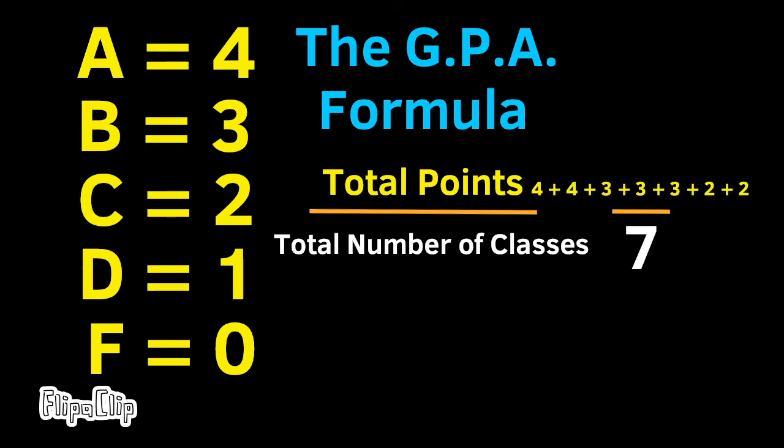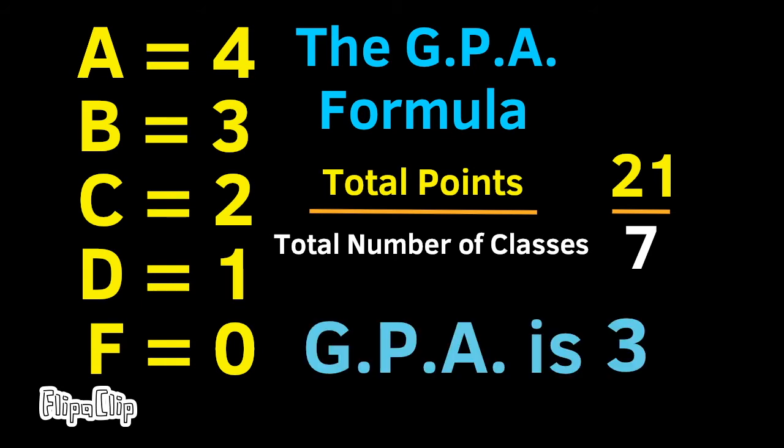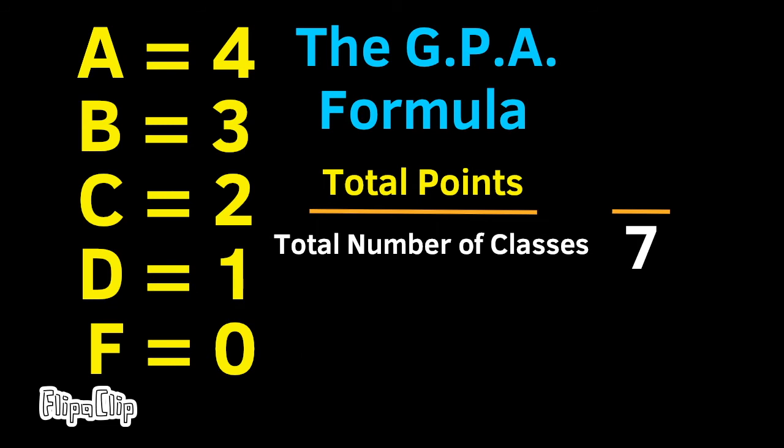Imagine the total number of classes is 7, and you earned 2 A's, 3 B's, and 2 C's, for a total of 21 points. Since 21 divided by 7 is 3, the GPA would be 3.0.